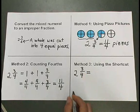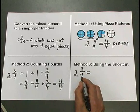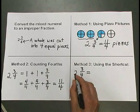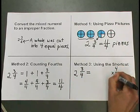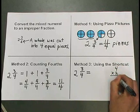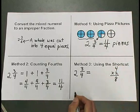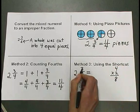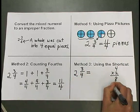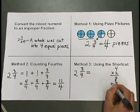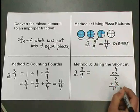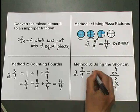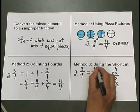In the shortcut method, we take the denominator 4 times the whole number part 2. 4 times 2 is how we get started. 4 times 2 is 8. We then add 3 more, the numerator of the fraction. 8 plus 3 is 11. 11 becomes the numerator of our answer.